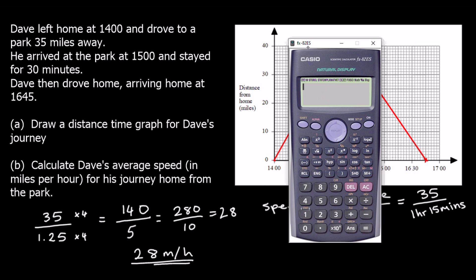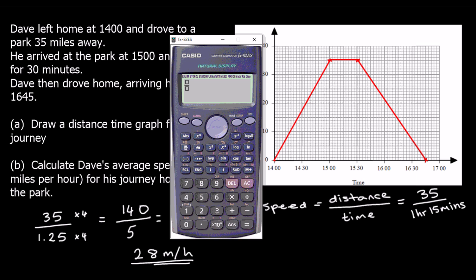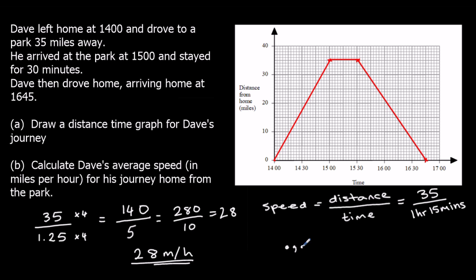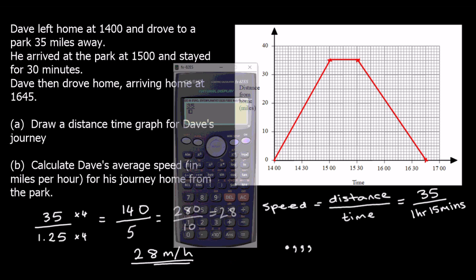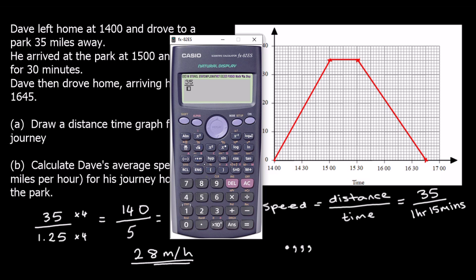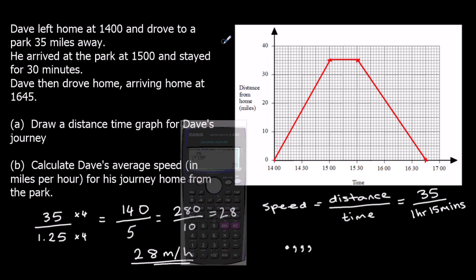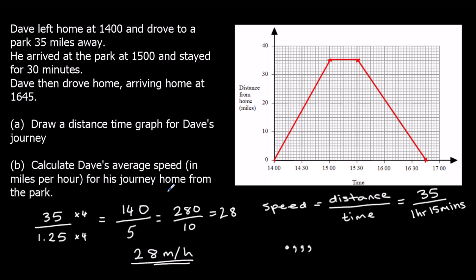Now let me show you on a calculator. On a calculator, we can write 35 over and using our time button, which is the one that looks like this, something like that. We can write 1 hour and 15 minutes. And press equals and we get 28. So that's much easier on a calculator. So the speed for the journey home was 28 miles per hour.